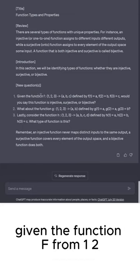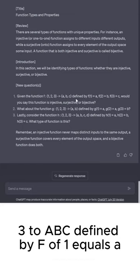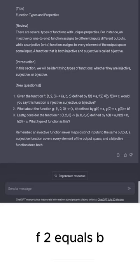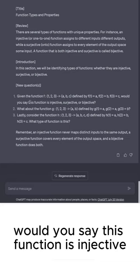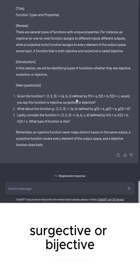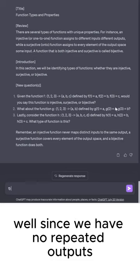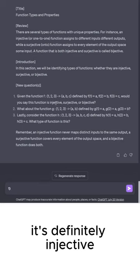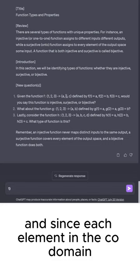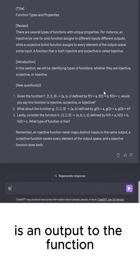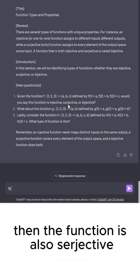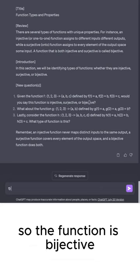Here's our questions. Given the function f from {1, 2, 3} to {a, b, c}, defined by f(1) = a, f(2) = b, f(3) = c, would you say this function is injective, surjective, or bijective? Well, since we have no repeated outputs, it's definitely injective. And since each element in the codomain is an output to the function, then the function is also surjective. So the function is bijective.